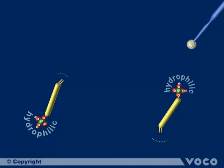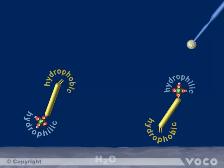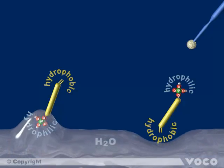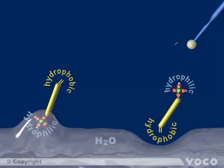On the one hand a hydrophilic part, hydrophilic means water loving, which enables the connection to the tooth. On the other hand a hydrophobic part, which means water repellent, which builds up the chemical connection to the composite.